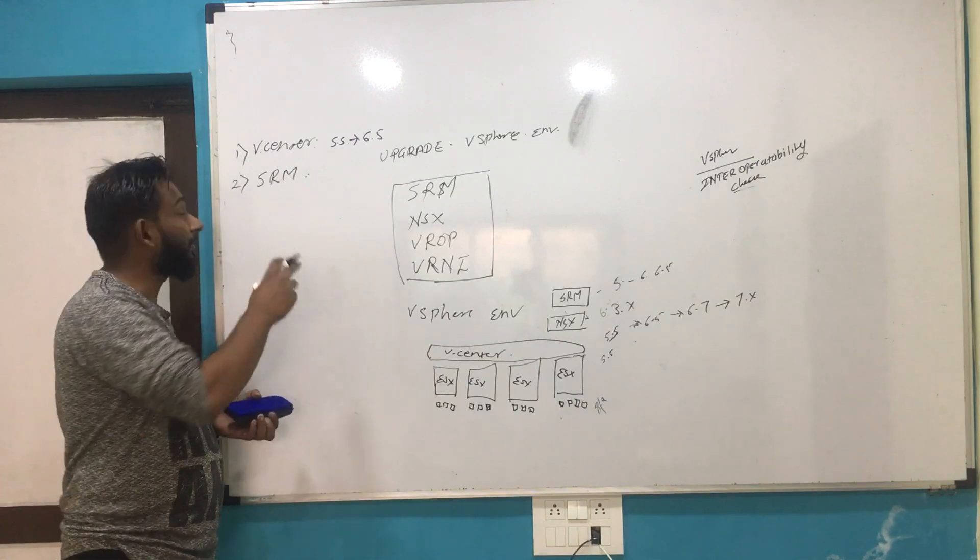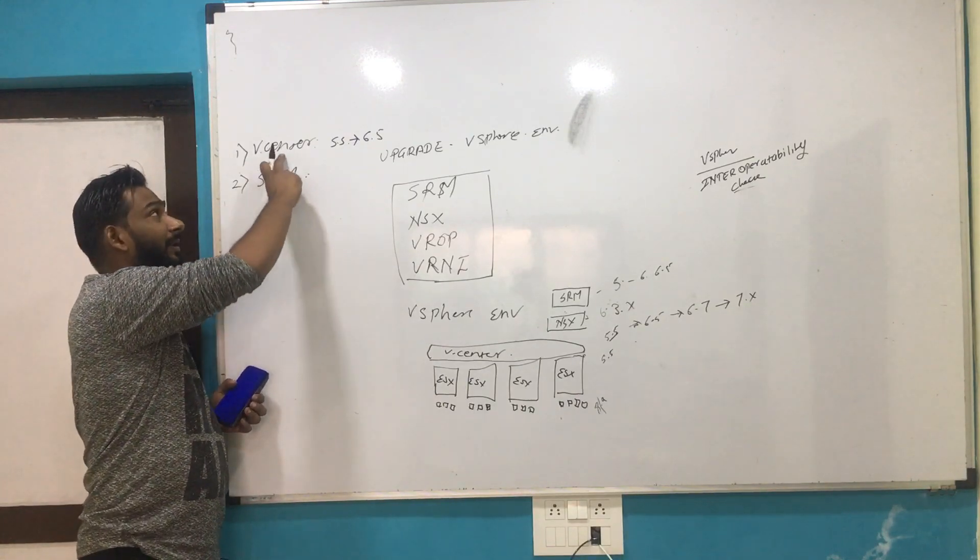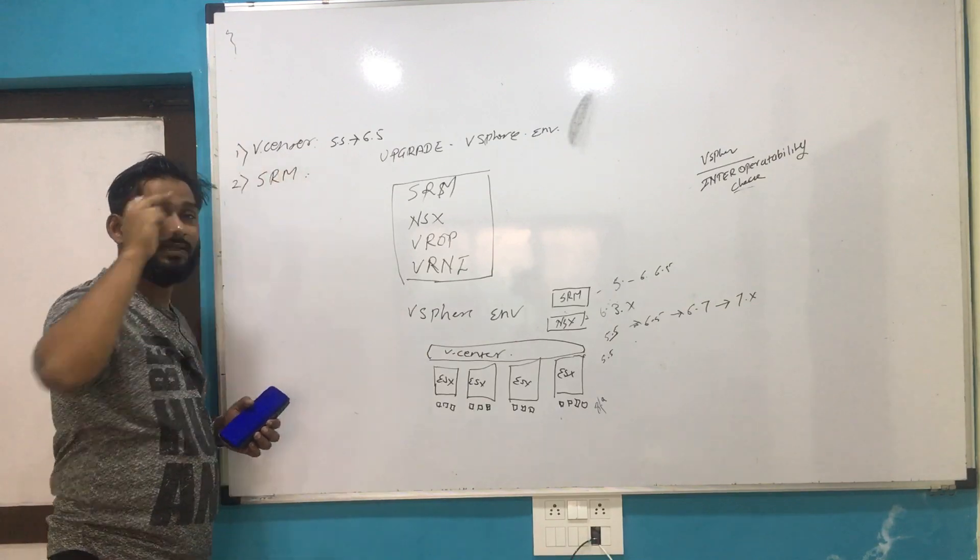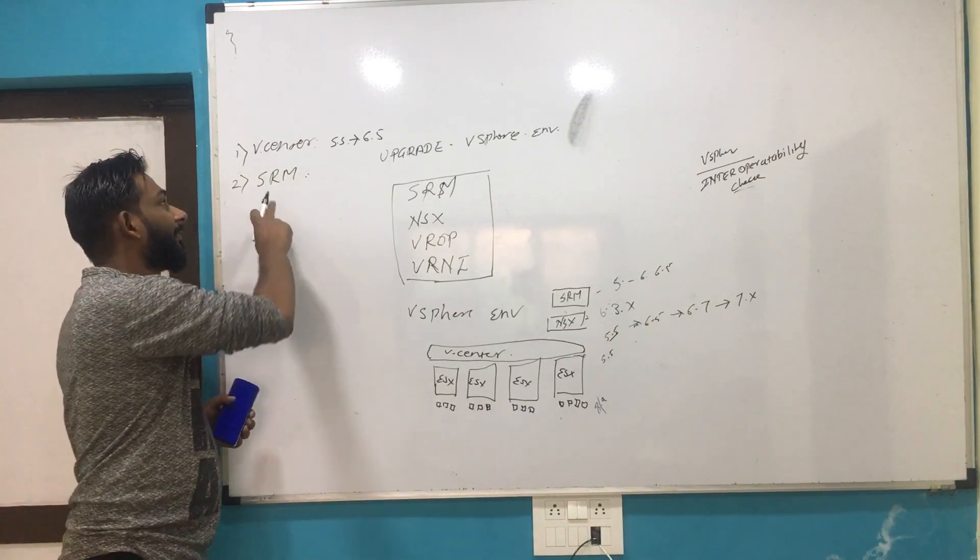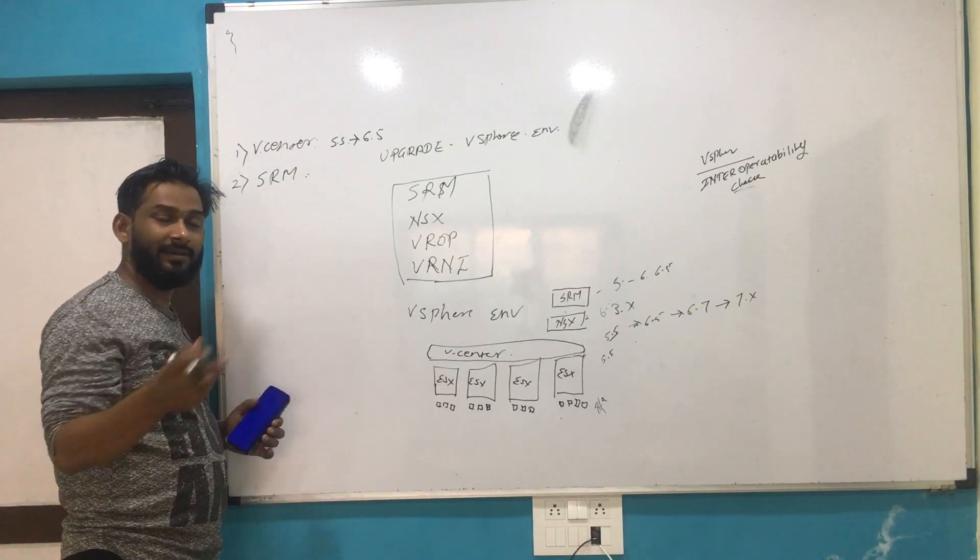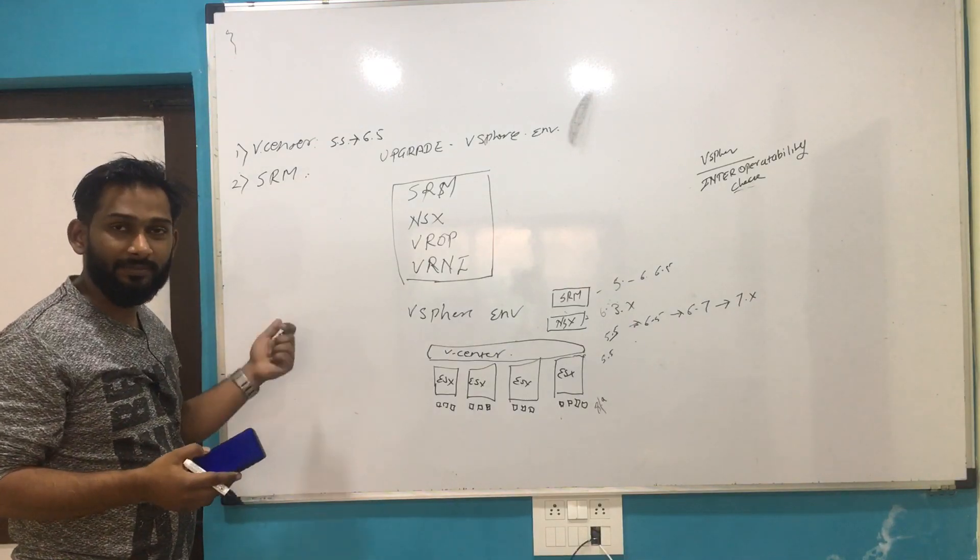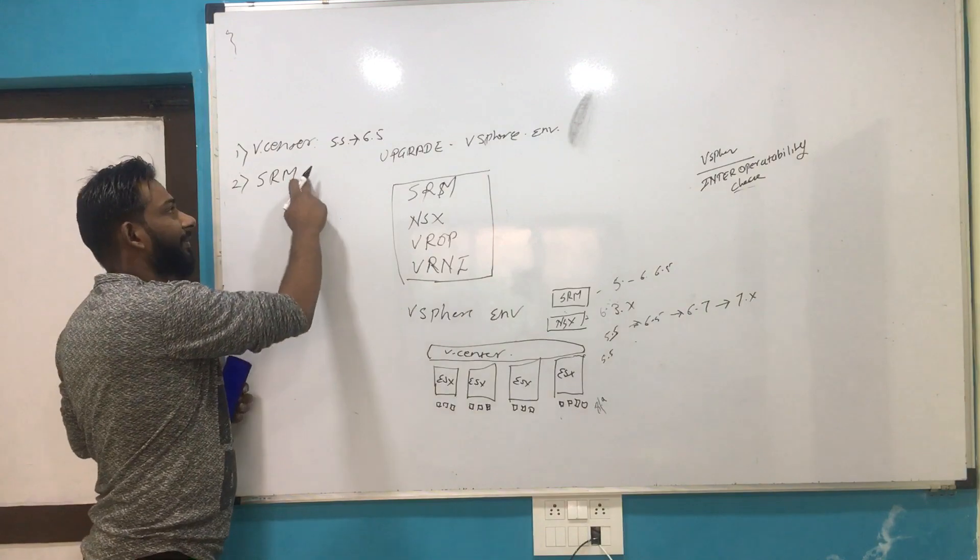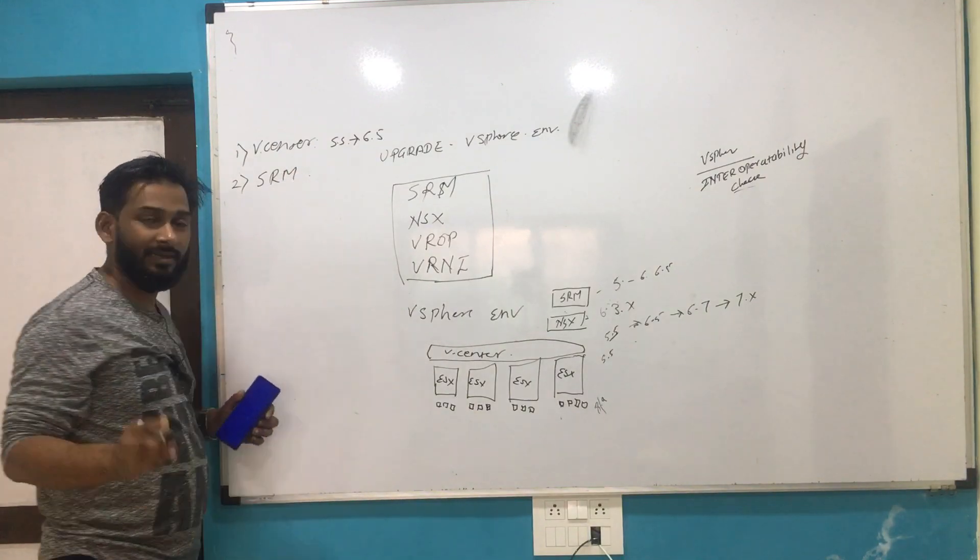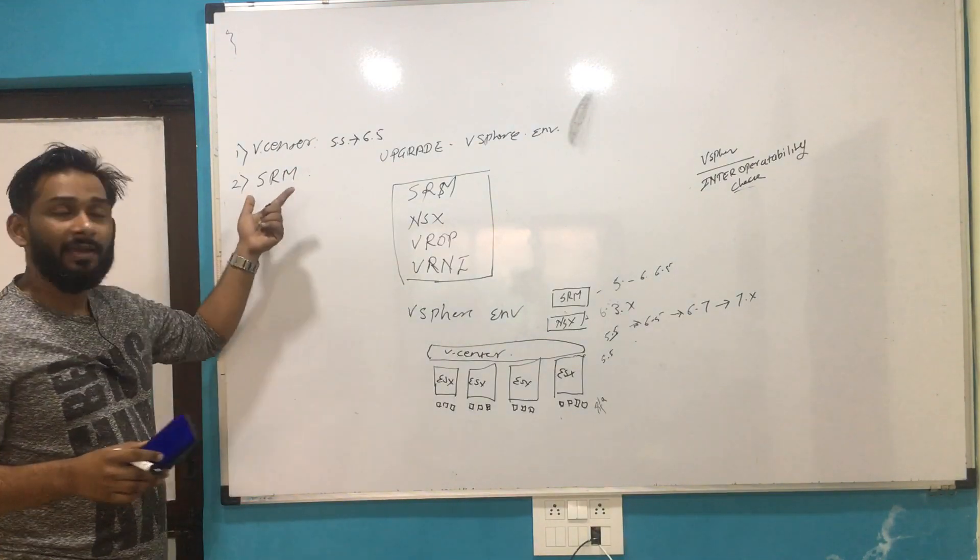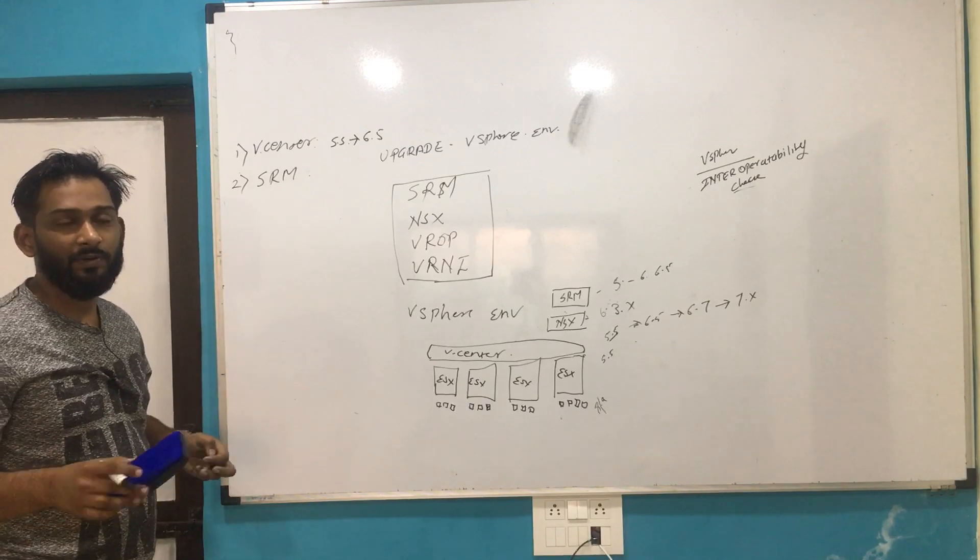You need to make sure that the site is connected. Both the sites are connected. You upgrade products in SRM Server, then upgrade the DR vCenter Server, then you upgrade the products in SRM Server and the DR vCenter Server, and you also perform the site pairing if site pairing breaks.